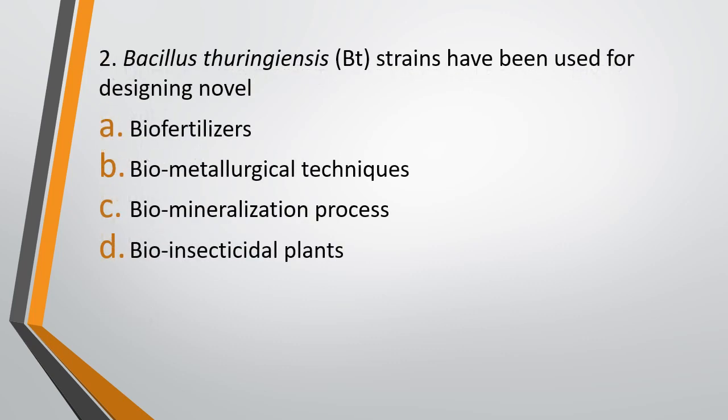Question 2. Bacillus thuringiensis strains have been used for designing novel: Option A, biofertilizers. Option B, biometallurgical techniques. Option C, biomineralization processes. Option D, bioinsecticidal plants. The correct answer is option D, bioinsecticidal plants.